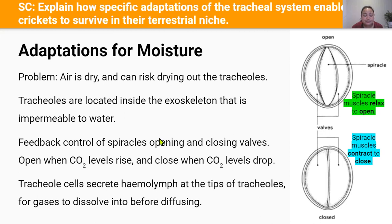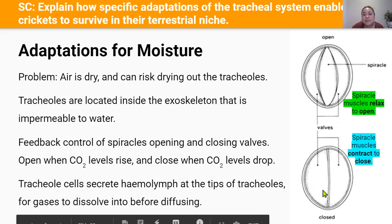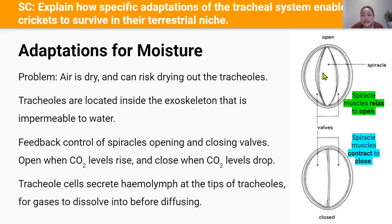The cricket tracheal system has three adaptations to keep tracheals moist. The first is that the tracheal system is internal, located inside the body to limit exposure to environmental factors like sun and wind. It is enclosed behind an exoskeleton which is impermeable to water, preventing water from escaping or evaporating out of the cricket's body. The second adaptation involves the spiracles — valved openings in the exoskeleton that open and close to control water loss and ventilation. When spiracle muscles relax, the valves open; when they contract, the spiracles close.